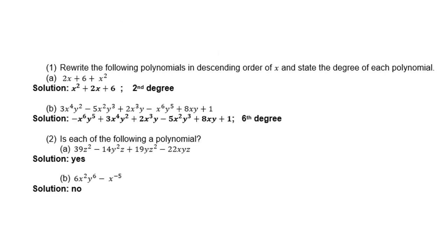So here's the solutions. 2x + 6 + x², in descending order, you start with x² first, then 2x, then 6, and of course it is to the second degree. The next one, if I rewrite it, it is -x⁶y⁵ + 3x⁴y² + 2x³y - 5x²y³ + 8xy + 1, and this one is to the 6th degree.